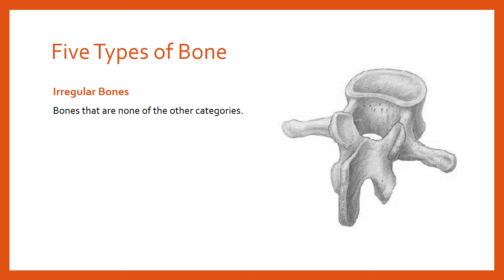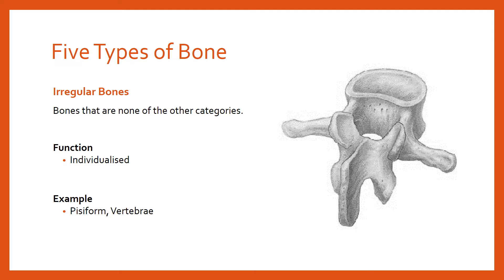The last type of bone is irregular bones — bones that won't fit into any of the other categories. We're left with a handful of bones that aren't long, short, flat, or sesamoid, so we categorise them together as irregular bones. Their function is individualised. The example on screen is a vertebra: it has a complex shape with protrusions for muscle attachments, a hole through the middle for the central nervous system, and a concave surface where intervertebral discs sit.